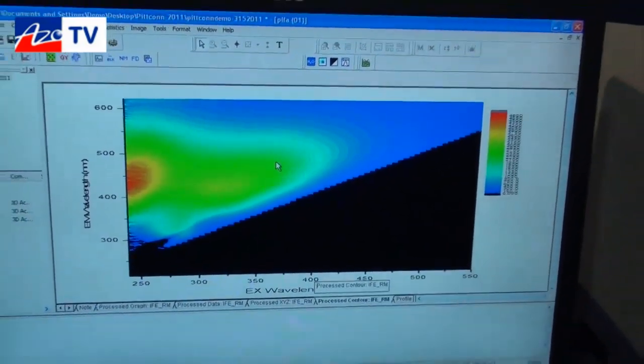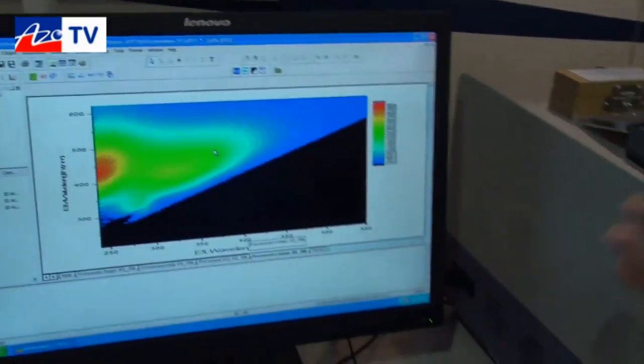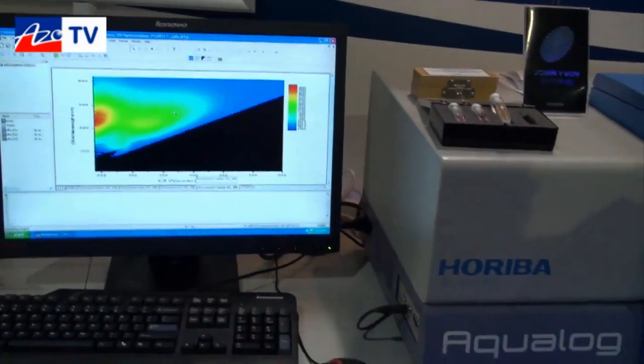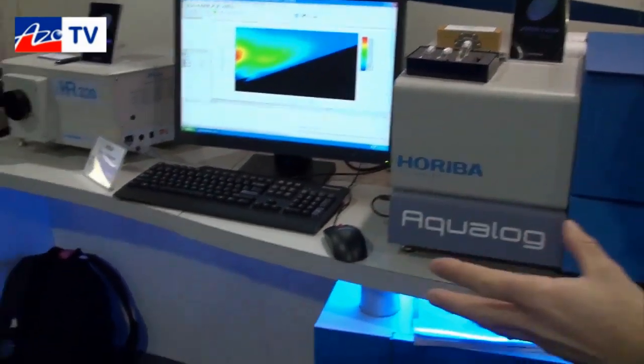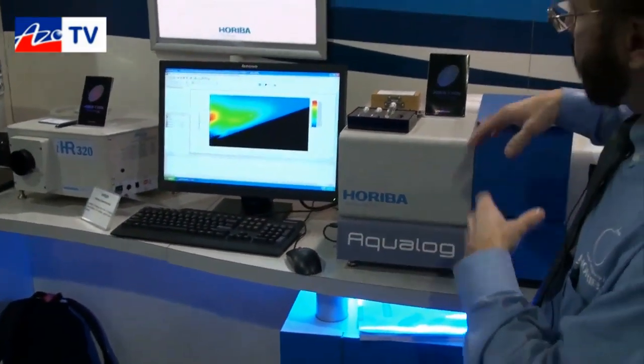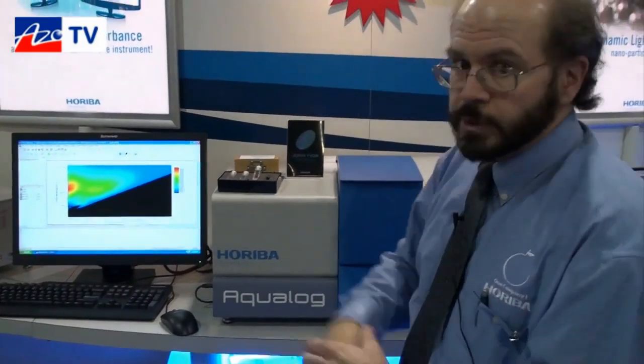So again, just as an overview, this is the first system to do true simultaneous absorption fluorescence. It's the first system that uses a CCD so it can acquire data 100 times faster. And it's the first system that employs inner filter effect correction, Rayleigh masking and normalization to quinine sulfate standard units or Raman scattering units for a quantitative analysis that allows you to do true validated interlaboratory comparisons.